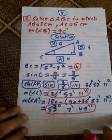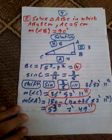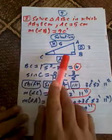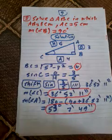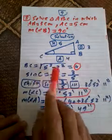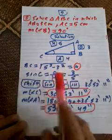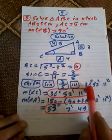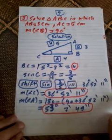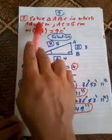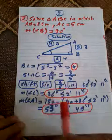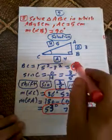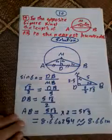Solve the triangle in which AB equals 3 cm, AC equals 5 cm, and angle B equals 90 degrees. This is a right triangle where AB is opposite and AC is the hypotenuse. Using Pythagoras, BC equals 4. Sine of angle C equals opposite over hypotenuse equals 3 over 5. Using a calculator (shift sine of 3/5), angle C equals 36 degrees 52 minutes and 11 seconds. Solving the triangle means finding all missing elements.